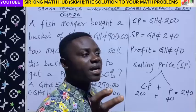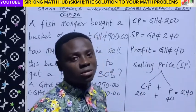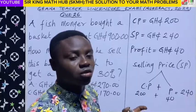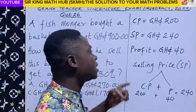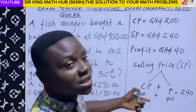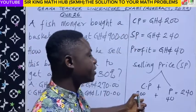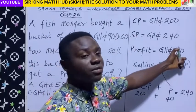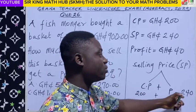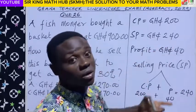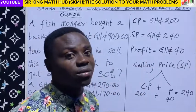When you sum up the cost price and the profit, that should give you the selling price. From the analysis we have done, it is true. The cost price was 200 cedis, the profit was 40 cedis, and when we added them, we had the selling price of 240 Ghana cedis. We are going to apply the same concept to solve this particular question.